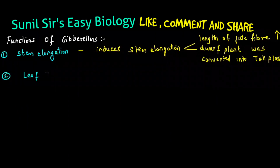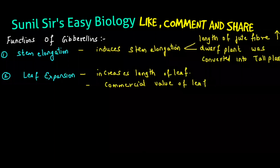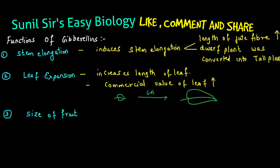It can make every dwarf plant phenotypically tall, but genotypically it will remain dwarf. Second function of Gibberellins is leaf expansion. When you talk about leaf expansion, all leafy products — spinach leaves, fenugreek leaves — these leafy vegetables, if their leaf size increases, their commercial and market value will definitely be higher. Spraying Gibberellins increases the length of the leaf — this is a very important part. Because of this, commercial value also increases. This is the second function of Gibberellins.